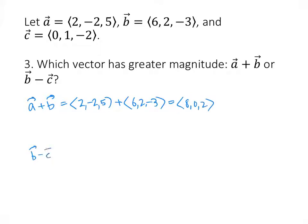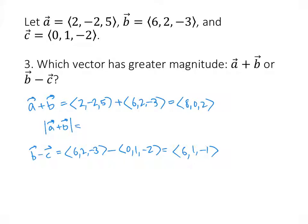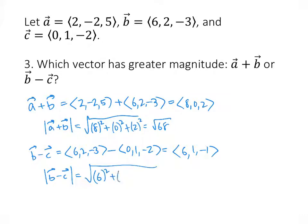And b - c is (6, 2, -3) - (0, 1, -2), which works out to be (6, 1, -1). The magnitude of a + b is √(8² + 0² + 2²) = √68, and the magnitude of b - c is √(6² + 1² + (-1)²) = √38. Since 68 is more than 38, the square root of 68 is more than the square root of 38, so a + b has greater magnitude.